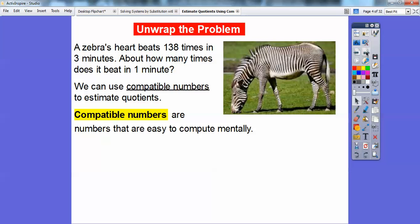We can use compatible numbers to estimate quotients, and compatible numbers are numbers that are easier to compute mentally, instead of 138.